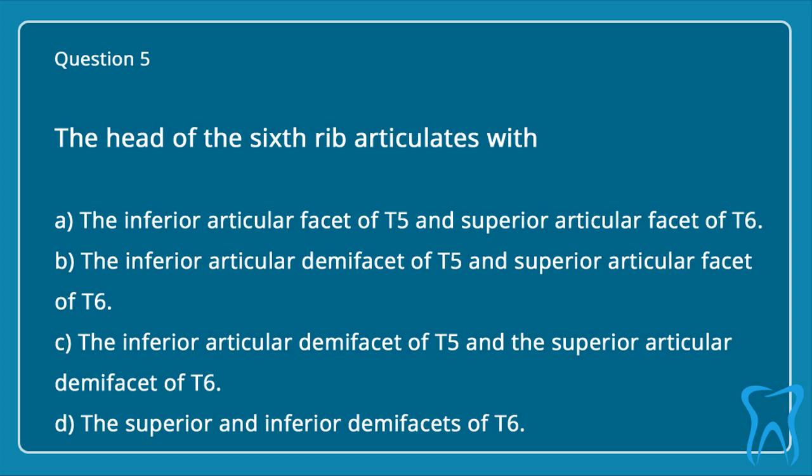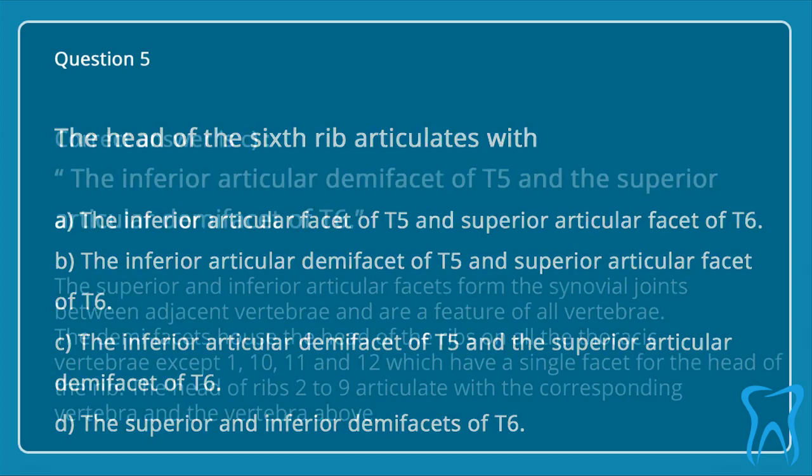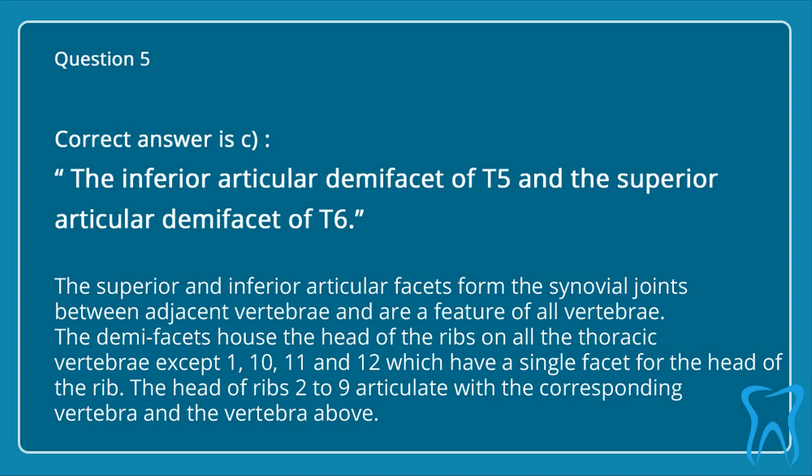d. The superior and inferior demifacets of T6. Correct answer is c: the inferior articular demifacet of T5 and the superior articular demifacet of T6. The superior and inferior articular facets form the synovial joints between adjacent vertebrae and are a feature of all vertebrae. The demifacets house the head of the ribs on all thoracic vertebrae except T1, T10, T11, and T12, which have a single facet for the head of the rib. The head of ribs 2 to 9 articulate with the corresponding vertebra and the vertebra above.